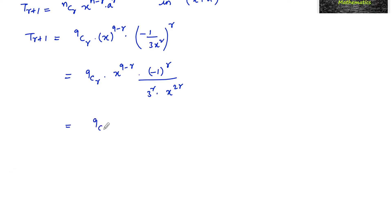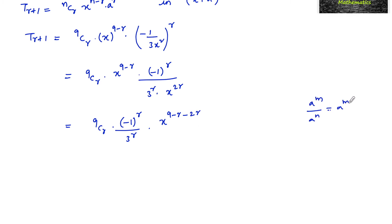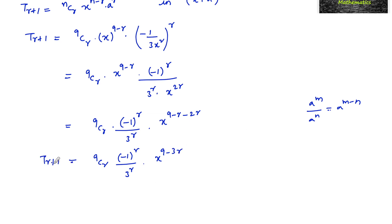So we get 9Cr times (minus 1) whole to the power of r, upon 3 to the power of r, times x to the power of (9 minus r minus 2r), by using the rule a to the power m divided by a to the power n equals a to the power (m minus n). So this simplifies to 9Cr times (minus 1)^r upon 3^r into x to the power of (9 minus 3r). This is the general term in the expansion.